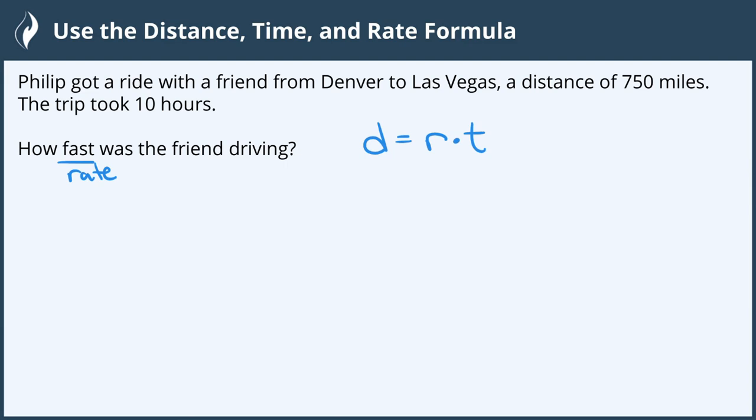We were also given a few things in our problem as the distance is 750 miles and the trip took 10 hours. We can substitute those in for distance and time leaving the only variable left to be rate and that's exactly what we're looking for.